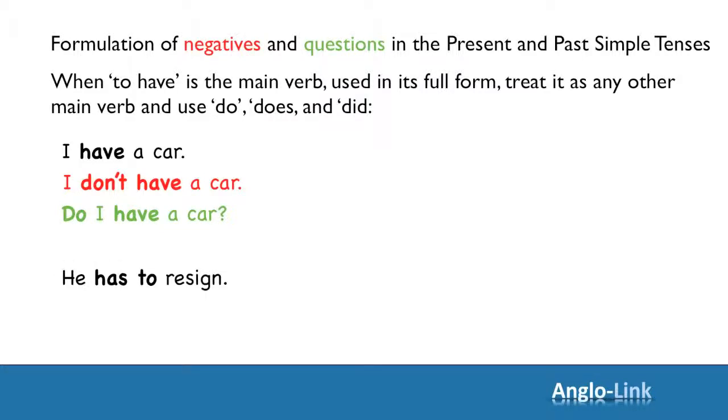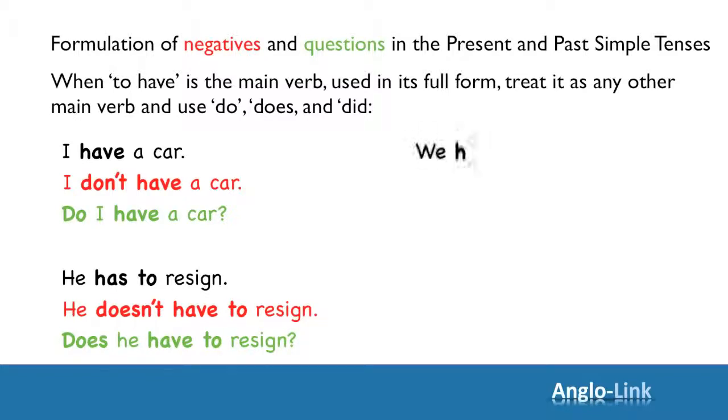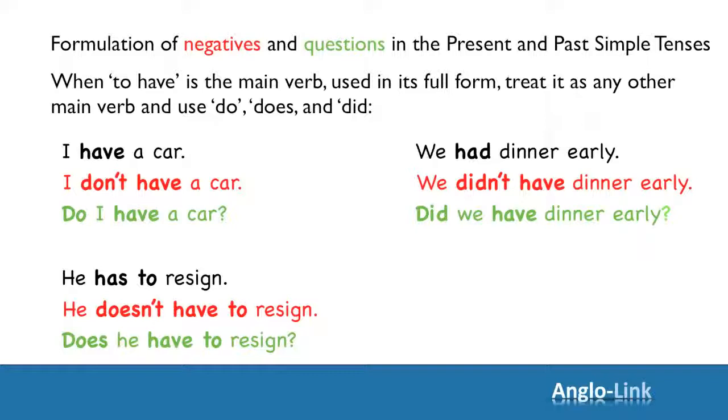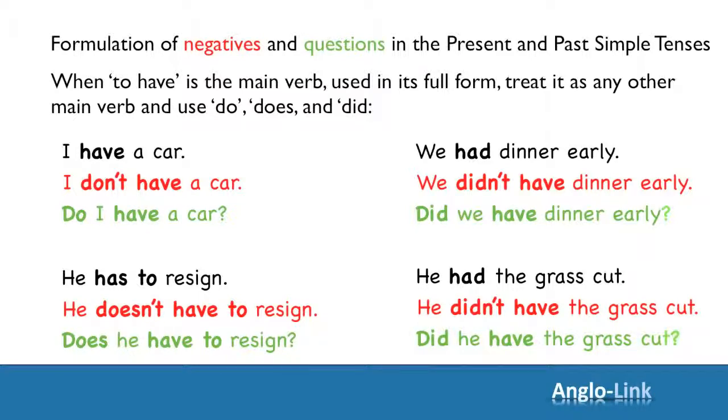Next example. He has to resign. Negative: He doesn't have to resign. Question: Does he have to resign? We had dinner early. We didn't have dinner early. Did we have dinner early? And one final example. He had the grass cut. He didn't have the grass cut. Did he have the grass cut?